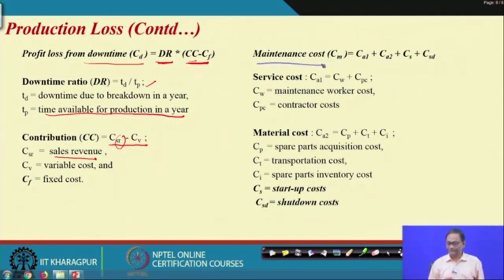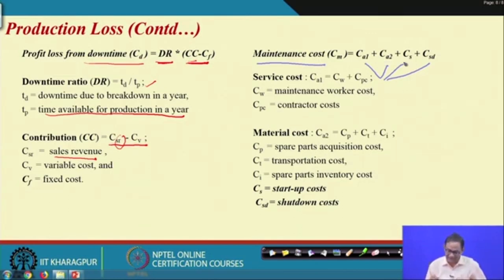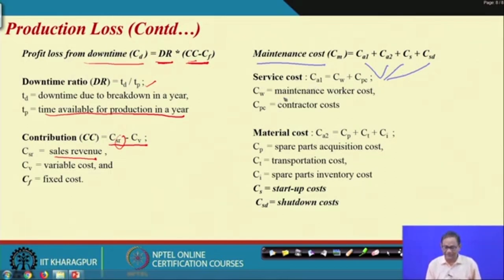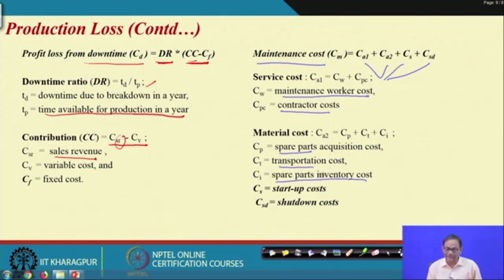Another cost is maintenance cost, which has four components: C_A1 is the service cost, C_A2 is the material cost, C_S is the startup cost, and C_SD is the shutdown cost. You may require to do a shutdown and then start up again. In addition, maintenance service cost and maintenance material cost will be there. Service cost includes maintenance workers cost (C_W) and contractors cost (C_PC). Material cost includes spare parts, transportation cost, and spare parts inventory cost.